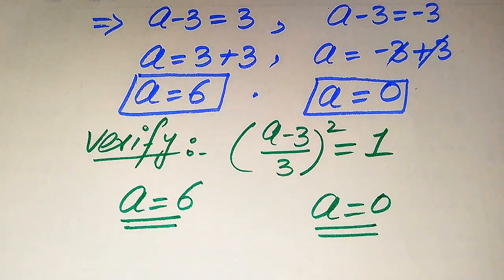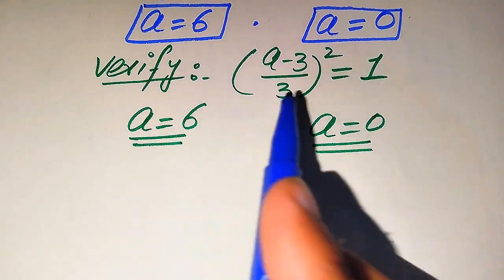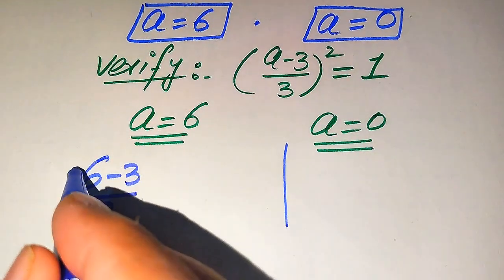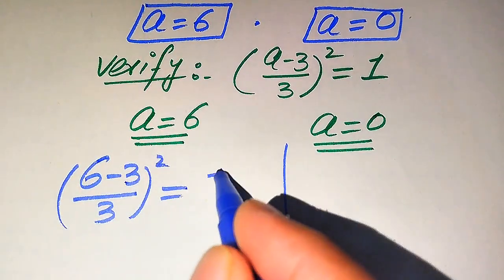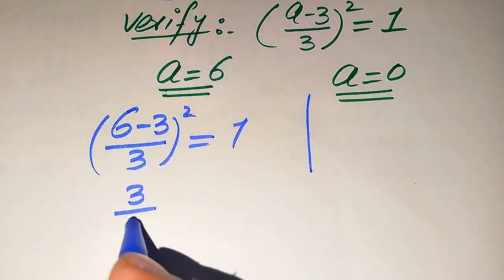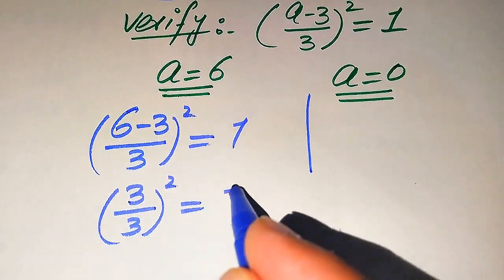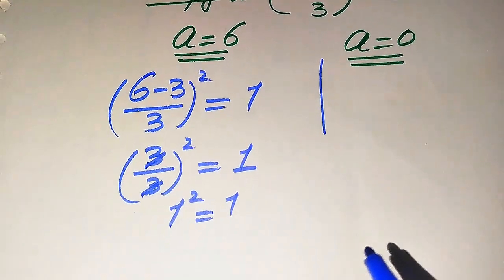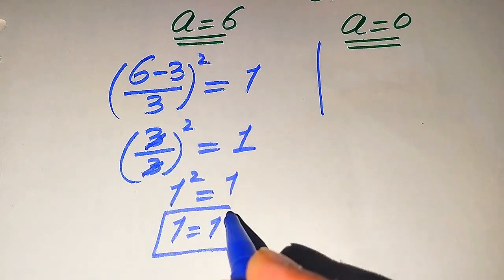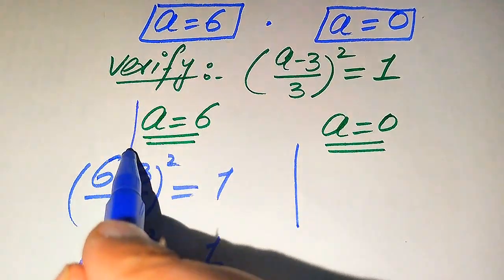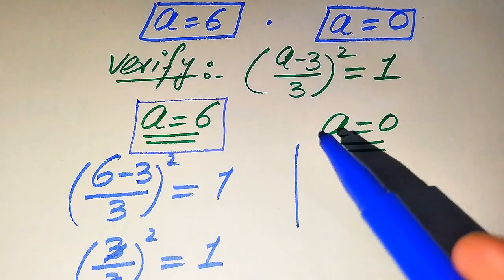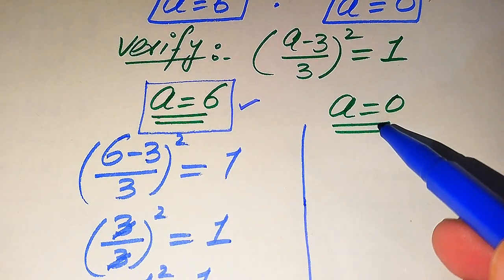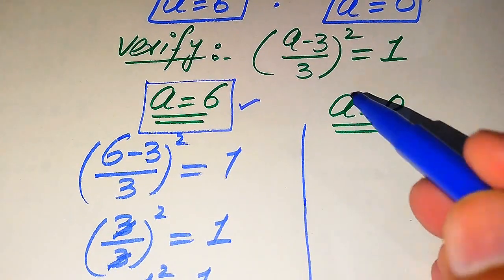Substituting a equals 6 into the left hand side: (6 minus 3) divided by 3, whole squared equals 1. We get 3 divided by 3, whole squared, which is 1 squared equals 1. Since 1 squared is 1, both sides are equal. This means a equals 6 satisfies our given equation.